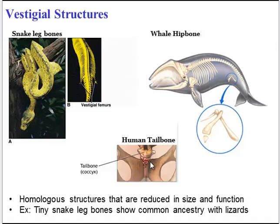Those vestigial homologous structures show snakes share a common ancestor with lizards. Similarly, in humans there is a tailbone, which shows common ancestry with species that have a tail. And even whales have tiny hip bones, which again shows common ancestry with species that have hips.